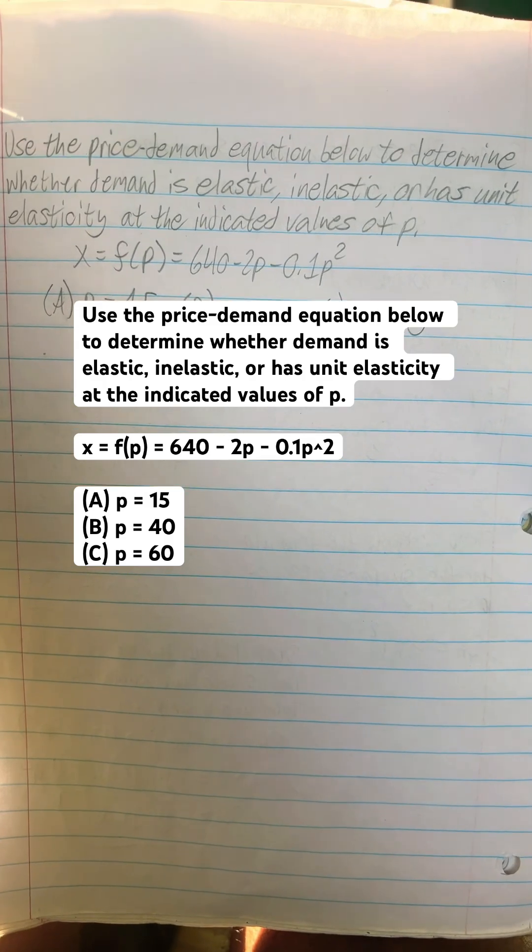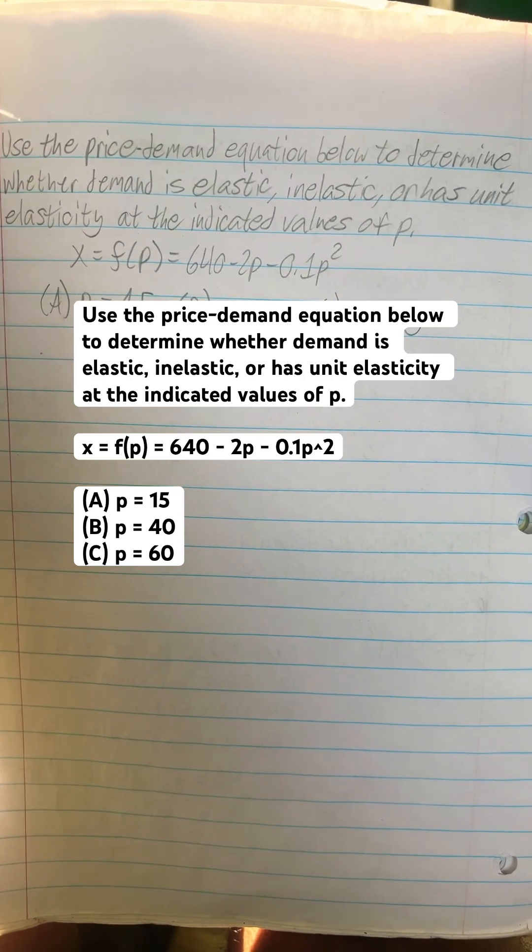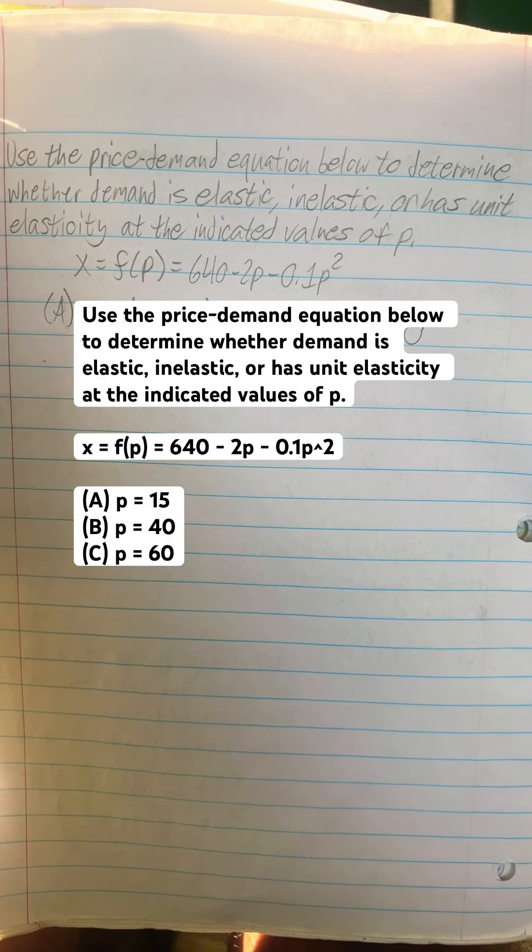Then you got number A, P is equal to 15, number B, P equals 40, and number C, P equals 60.